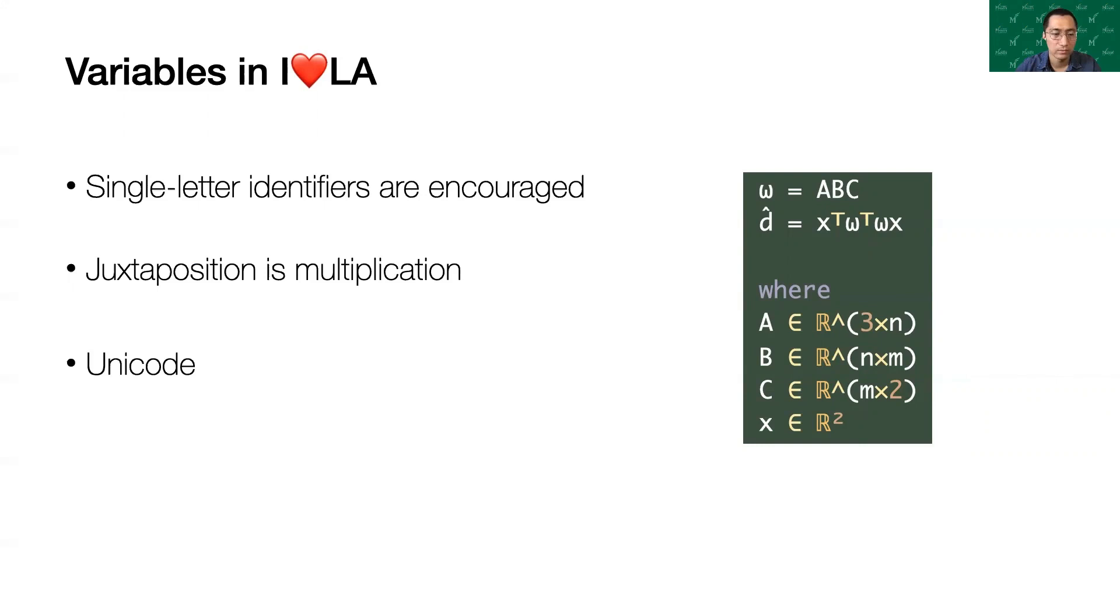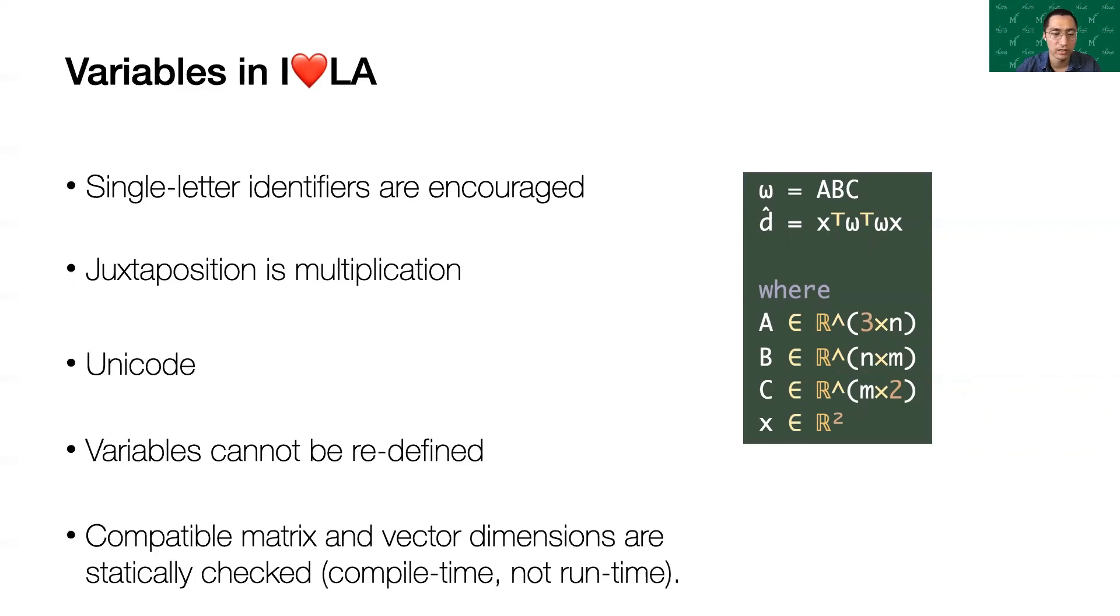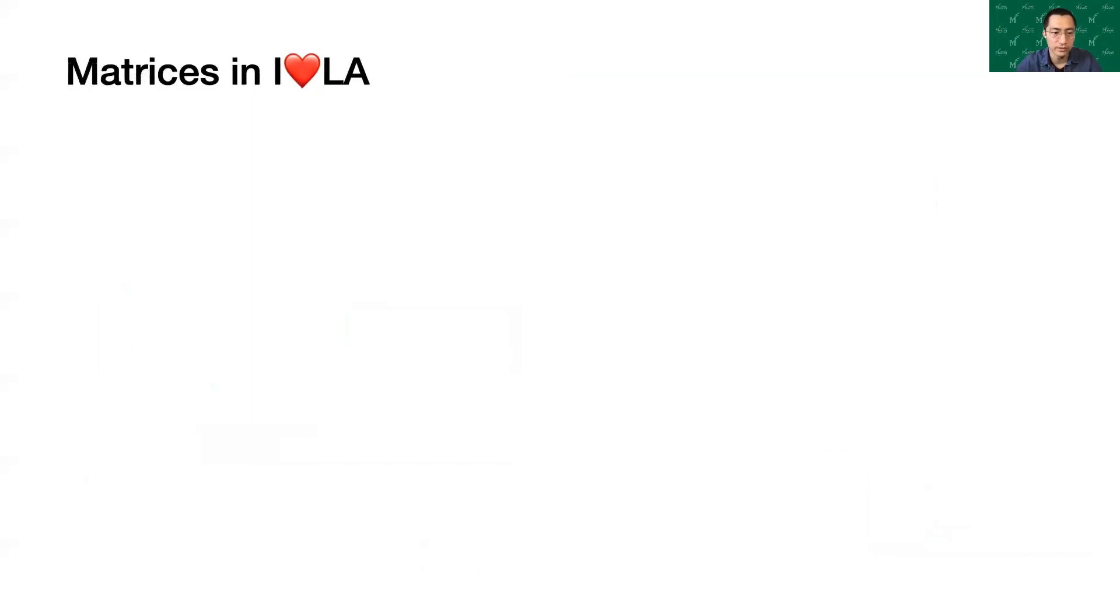We encourage single letter variable names, which allows for unambiguous multiplication by juxtaposition and convenient syntax for accessing matrix elements. This has implications for compiler design, which I will discuss later. Unicode allows for a large number of expressive variable names, including text decorations. Many editors, including our own, can perform convenient Unicode substitutions. We support vectors to enclose ambiguous long names.